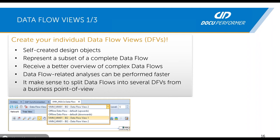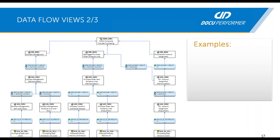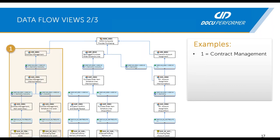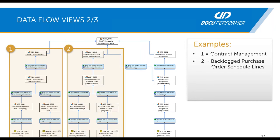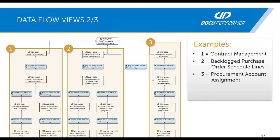Additionally, from a business point of view, it might make sense to split your data flow into several data flow views. For example, we have a data flow of the part provider — contract management, backlog purchase, and purchase account assignment. Maybe it makes sense to create a data flow view for contract management, one data flow view for this part provider, another one for this one, and maybe a fourth one for the account assignment.